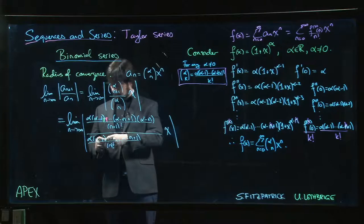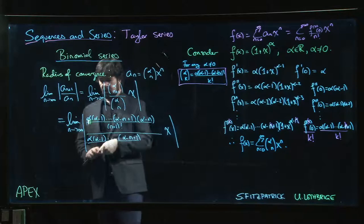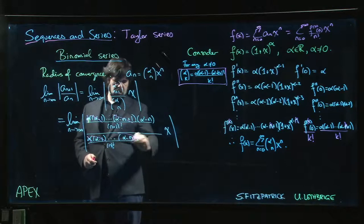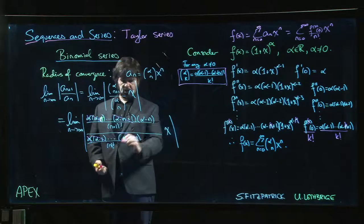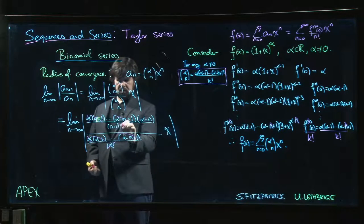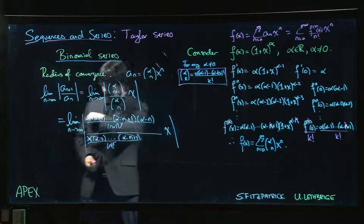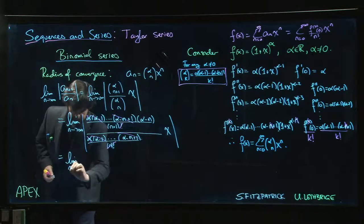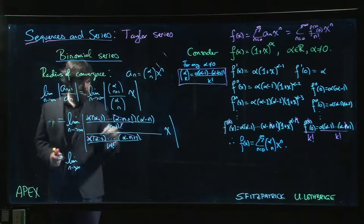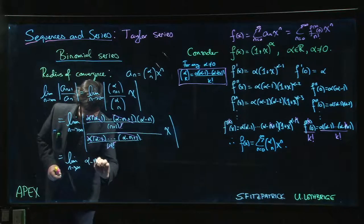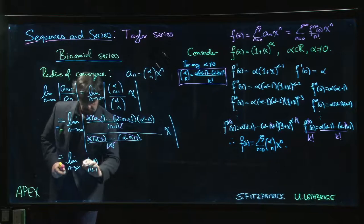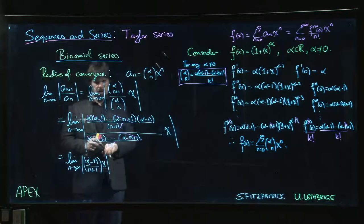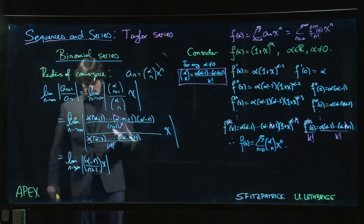And so we do the usual invert and multiply game, and we can see that a lot of stuff is going to cancel. Those cancel, those cancel, all of that cancels. That one sticks around. The n factorial, we can cancel with everything except for that. So we get, in the end, what we get is the limit, n going to infinity, of (alpha minus n) over (n+1) times x. And we have to take the absolute value of that thing.